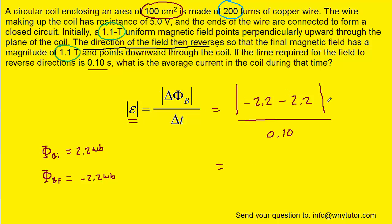Notice the absolute value symbols will make that change in flux positive. When you compute this, you should get 44, and since this is an induced EMF, the unit would be volts. So we now have the number of volts that are induced in the coil.